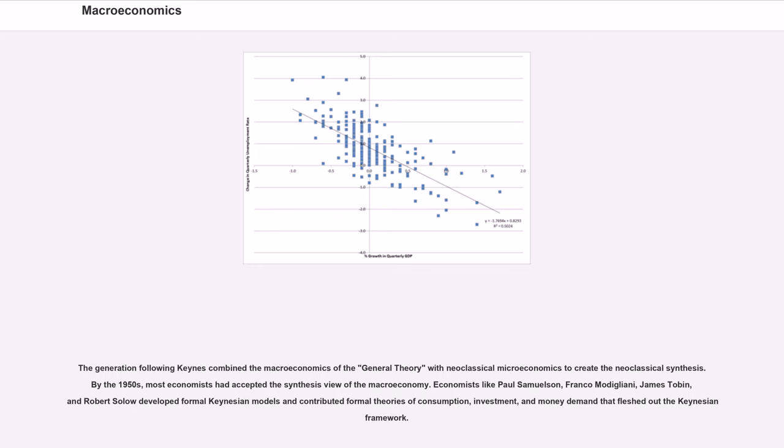The generation following Keynes combined the macroeconomics of the general theory with neoclassical microeconomics to create the neoclassical synthesis. By the 1950s, most economists had accepted the synthesis view of the macroeconomy. Economists like Paul Samuelson, Franco Modigliani, James Tobin, and Robert Solow developed formal Keynesian models and contributed formal theories of consumption, investment, and money demand that fleshed out the Keynesian framework.